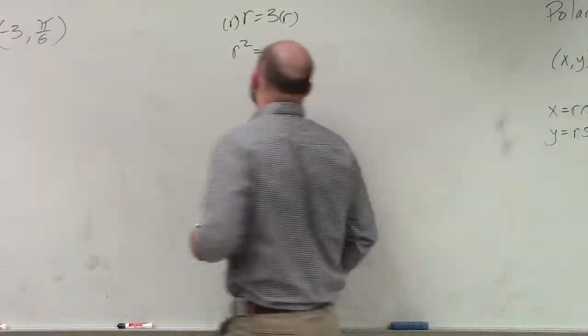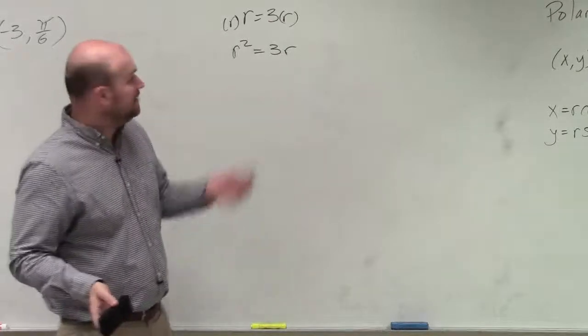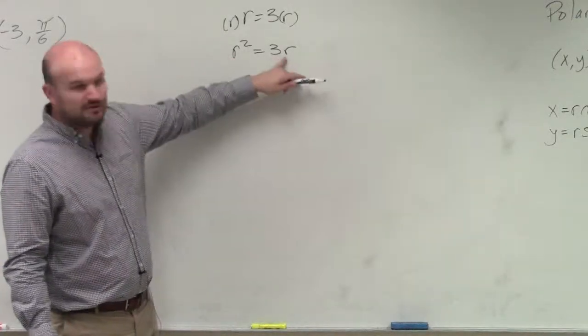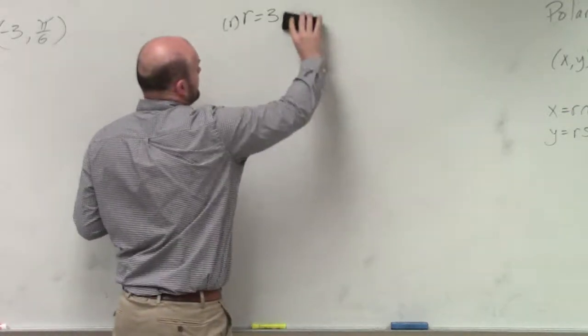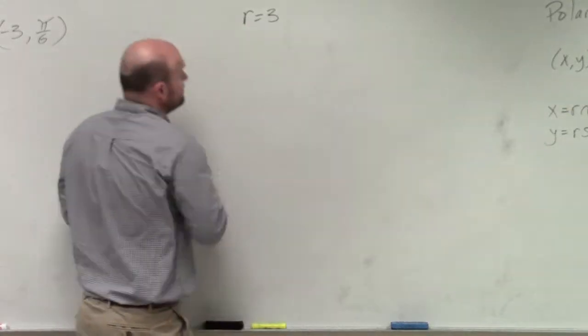Actually, you know what? Never mind. That's not going to help us out. But then we still have a problem, though. I like having r squared, but we still don't know what to do with this r, right? So multiplying by r is not going to help us. So make it square. Why don't we square both sides?